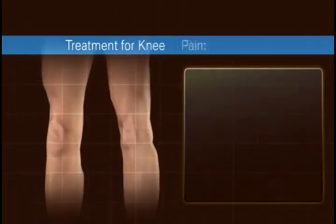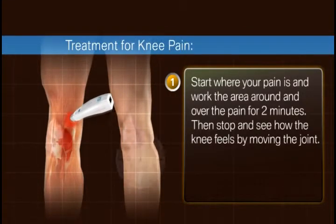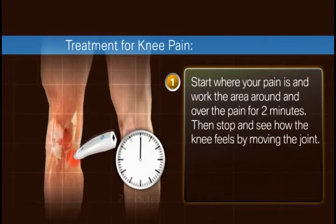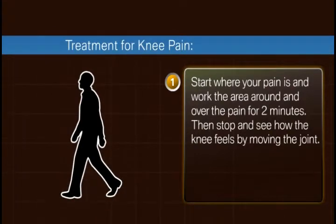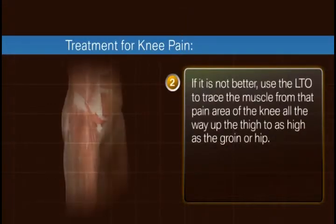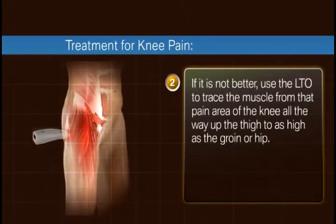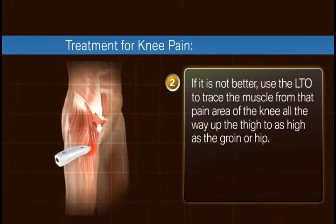Treatment for knee pain: Start where your pain is and work the area around and over the pain for two minutes. Then stop and see how the knee feels by moving the joint. If it is not better, use the LTO to trace the muscle from that pain area of the knee all the way up to the thigh, as high as the groin or hip.